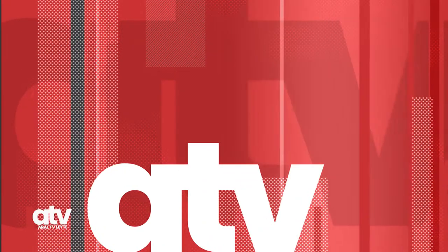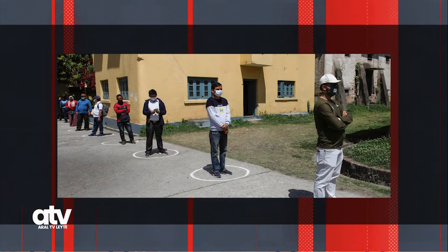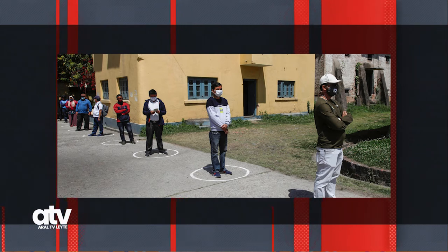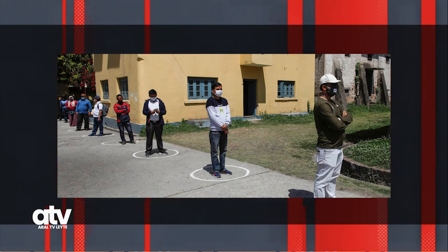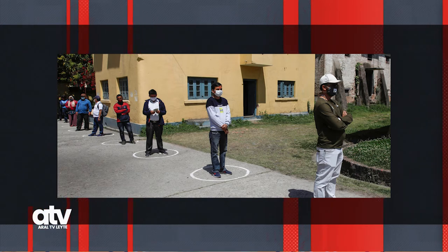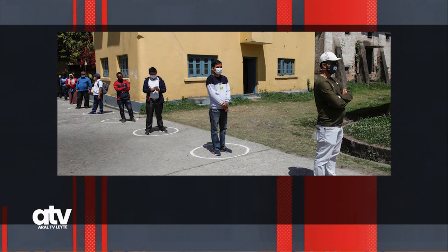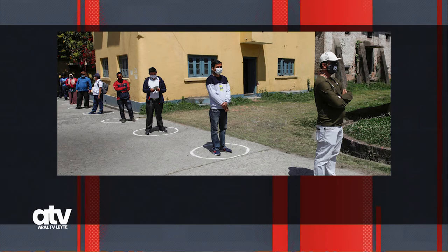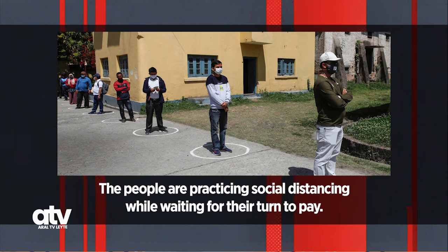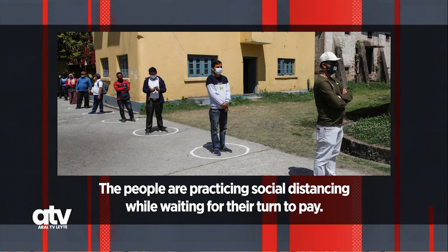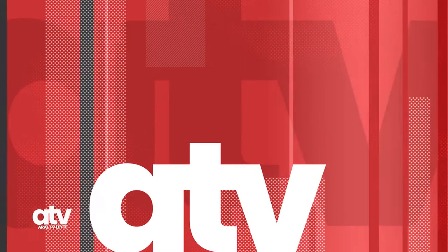Examine the picture that will be flashed on your TV screen. What can you say about the picture? The sentence that we can write about the picture is: 'The people are practicing social distancing while waiting for their turn to pay.' We must always practice social distancing and follow other health protocols to prevent the spread of coronavirus.